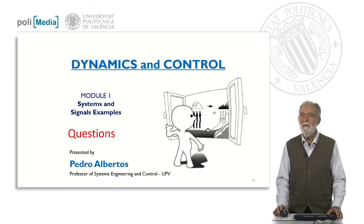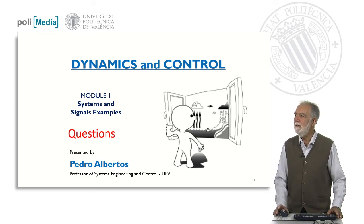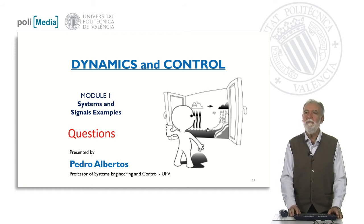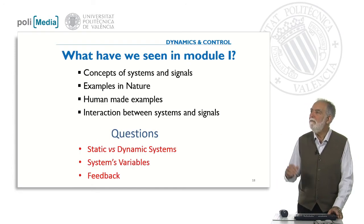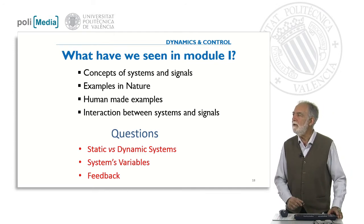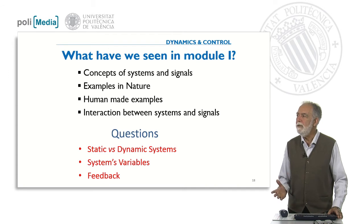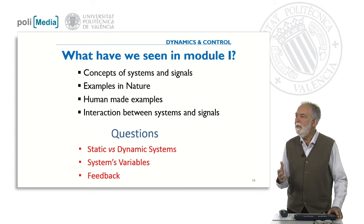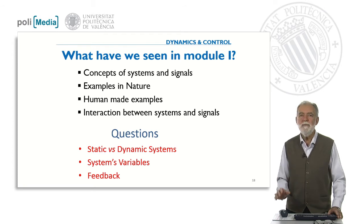Hello everybody. We are going to finish with the questions about module one — system and signal examples — in the course of dynamics and control. As you have seen, we dealt with the concept of systems and signals, examples in nature, human-made examples, interaction between systems and signals, and in particular the questions try to realize if you clearly understand the difference between static and dynamic systems and what is the concept of system variables.